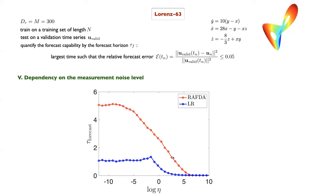The dependency on measurement noise shows an exponential decay in forecast horizon for large noise levels, consistent with sensitivity to initial conditions in chaotic systems — adding noise is like perturbing initial conditions, causing exponential separation of trajectories. For small noise, both models saturate to a plateau. RAFTER consistently outperforms classical random feature maps across the noise range.